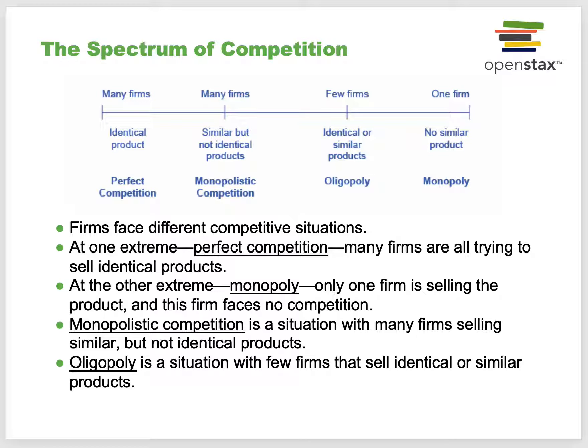Looking at examples: perfect competition might include fruits and vegetables, certain kinds of apples, almonds, agricultural products. A monopoly is usually an electricity company like Con Ed—they're the only provider of electricity, so you have to buy it from them. Monopolistic competition could be auto companies—Honda Civic, Toyota Corolla are similar but not identical. And an oligopoly might be something like Apple and Samsung when it comes to smartphones—identical or similar products, just a couple of firms.